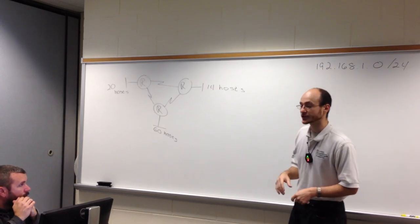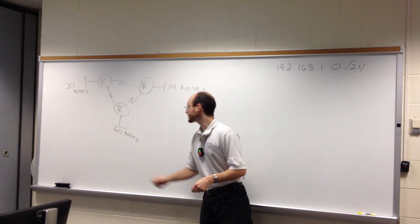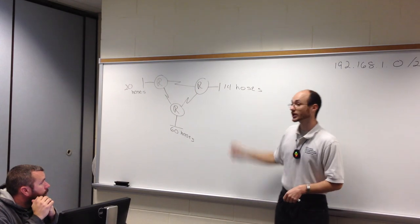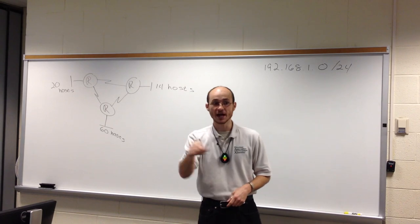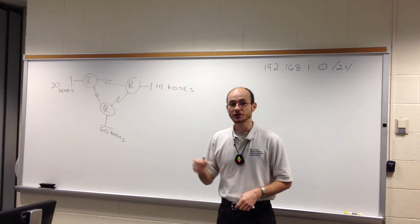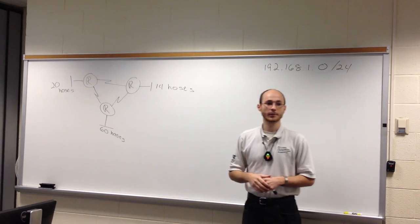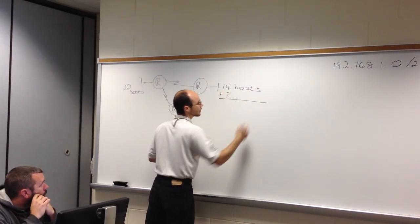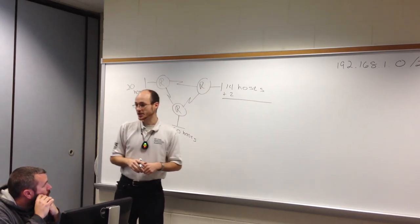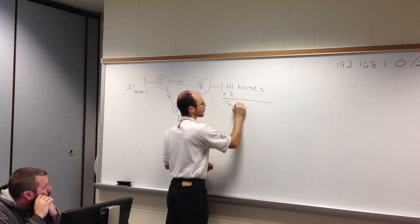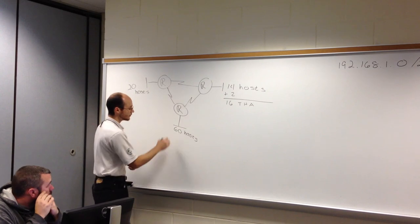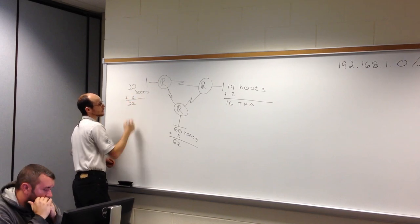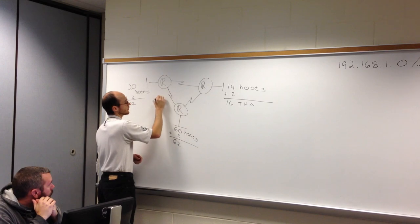You go to each floor and count end devices: first floor has 60 hosts, next floor has 20 hosts, last floor has 14 hosts. But I need to add two to each of these numbers to be more accurate when dividing up subnets, because each floor needs a network address and a broadcast address. So: 62 total host addresses for the first, 22 for the second, 16 for the third, and 4 total host addresses for the point-to-point WANs.